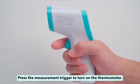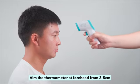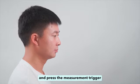Press the measurement trigger to turn on the thermometer. Aim the thermometer at the forehead from 3 to 5 cm and press the measurement trigger.